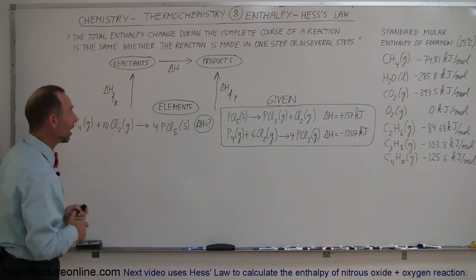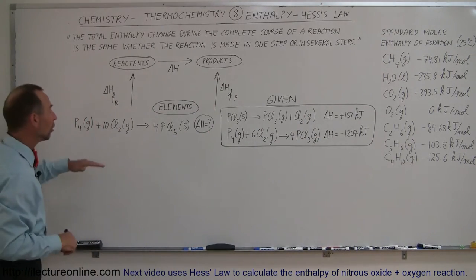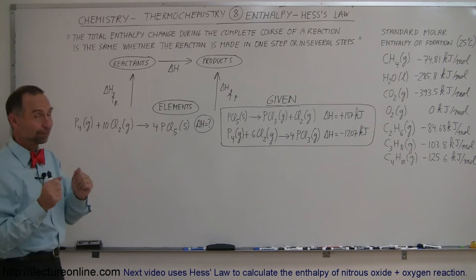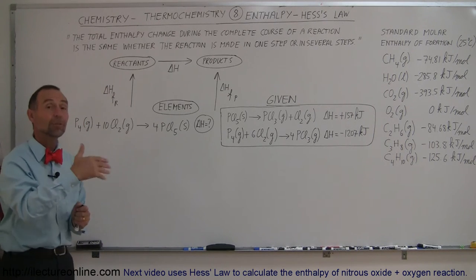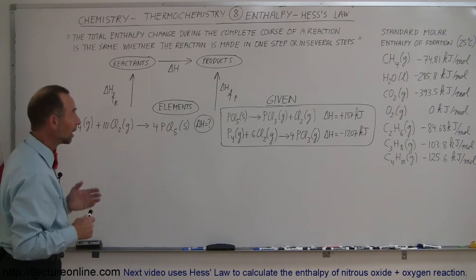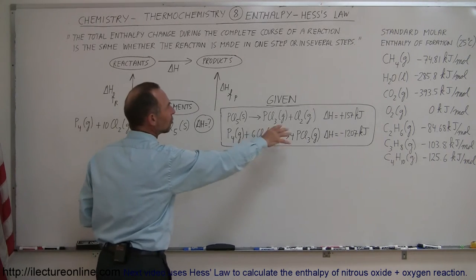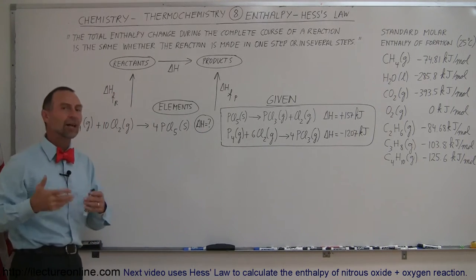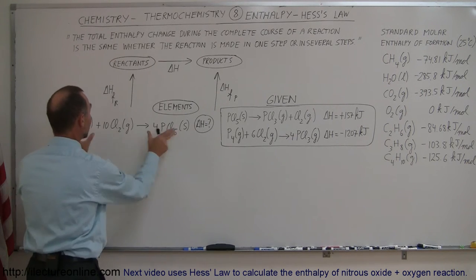The question is: how can we use these given reactions with their associated enthalpy changes to come up with the enthalpy change of this target reaction? There are actually a couple of methods. I want you to get a feel of what we're trying to do — somehow we have to come up with a combination of these so that this will be the result when we add them all up. It's kind of like an algebraic addition: you add up everything on the left side and everything on the right side.